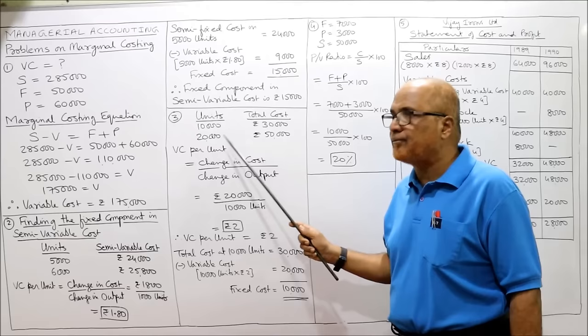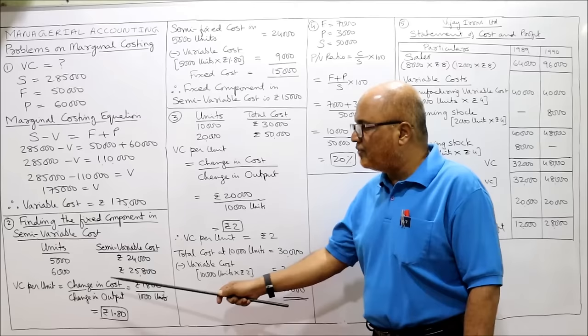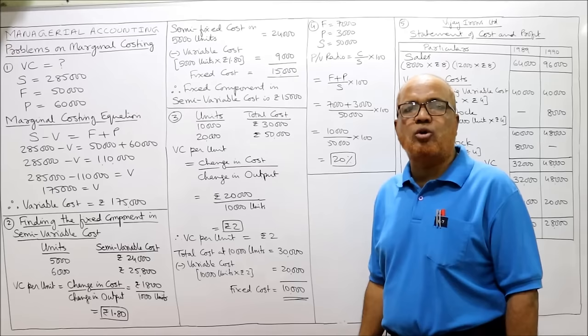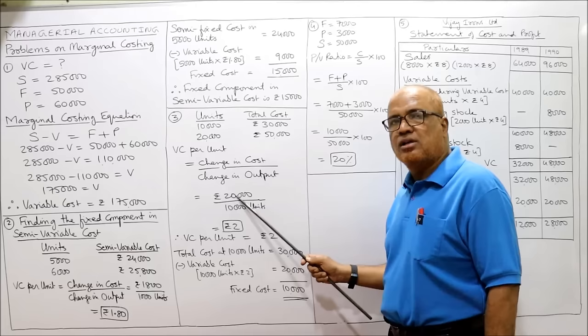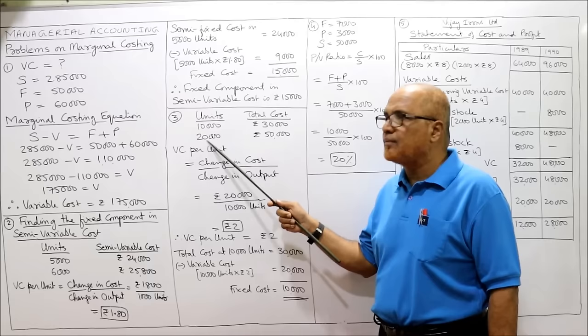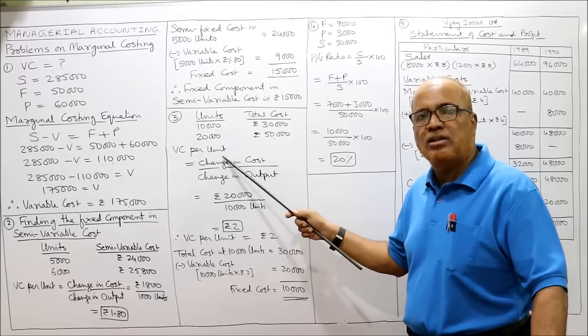At 10,000 units total cost is 30,000; at 20,000 units total cost is 50,000. Applying the formula: variable cost per unit = change in cost / change in output = (50,000 − 30,000) / (20,000 − 10,000) = 20,000 / 10,000 = 2 rupees. The variable cost per unit is 2 rupees.